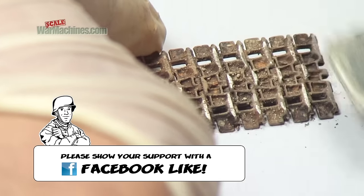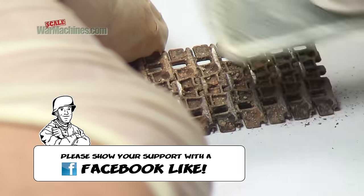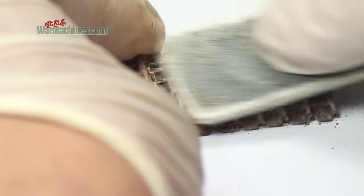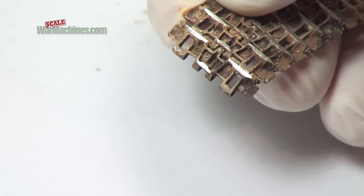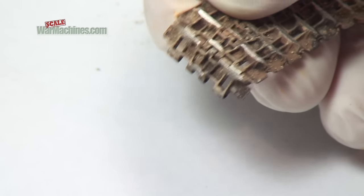When ready, use sandpaper or a sanding stick to rub down the track links to show bare metal, depicting natural wear and tear when in contact with the road surface.